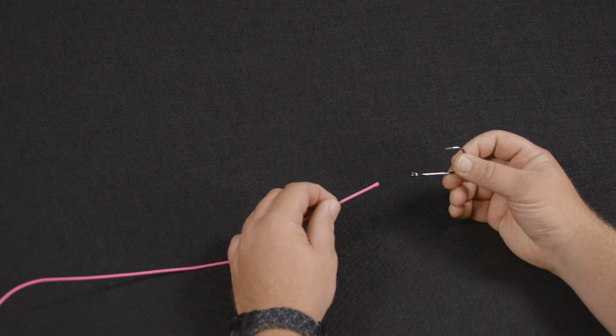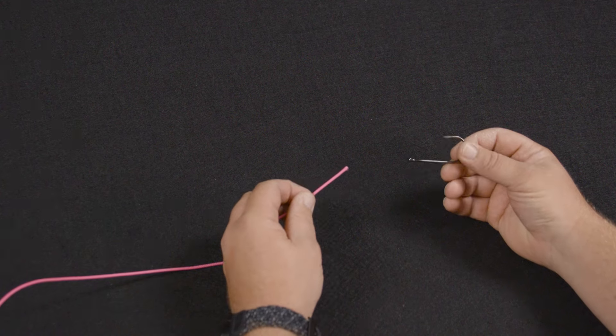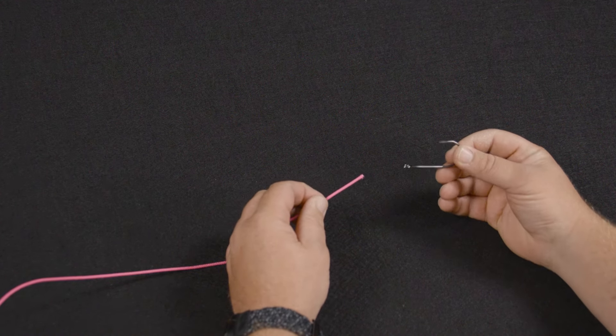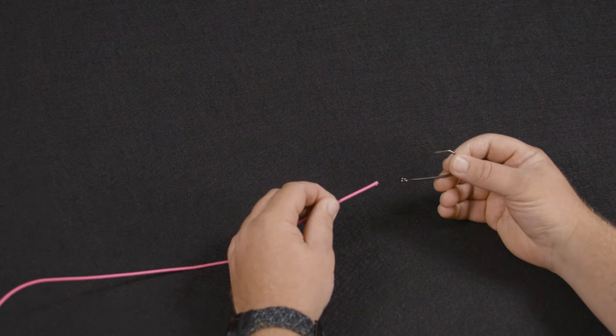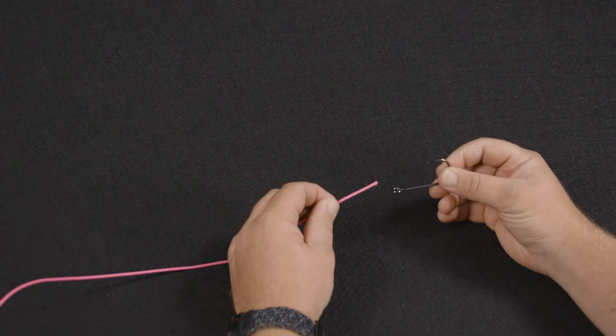And this is a knot that I use with heavy braided line when I'm fishing real heavy cover, punching mats, usually when I'm flipping with a straight shank flipping hook.